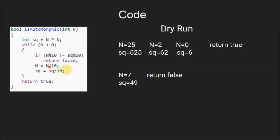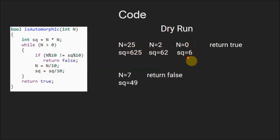The value of n is updated by n divided by 10, so n becomes 2 and sq becomes 62. Since n is still greater than 0, we enter the loop again. The last digits of n and sq are again equal, so we do not return false. Then n is updated to 0 and sq becomes 6. Since n is no longer greater than 0, we exit the loop and true is returned from the isAutomorphic function.